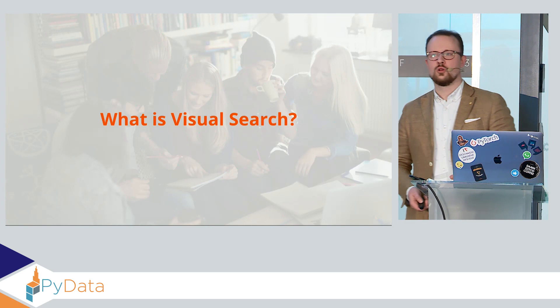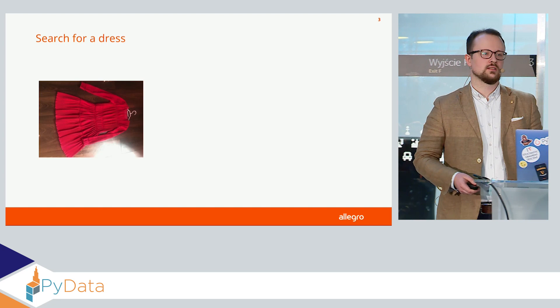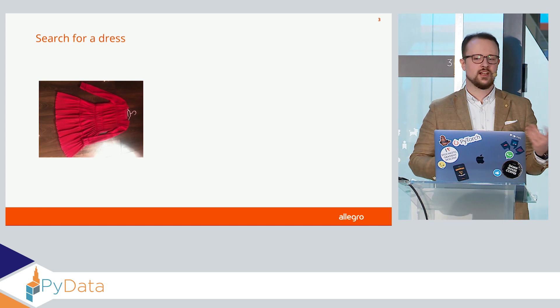Let's begin with the basics — what actually is visual search. Let's imagine we have a situation where a friend asks us: could you buy me this dress on Allegro? I don't have an account there, but she sent us only a picture.